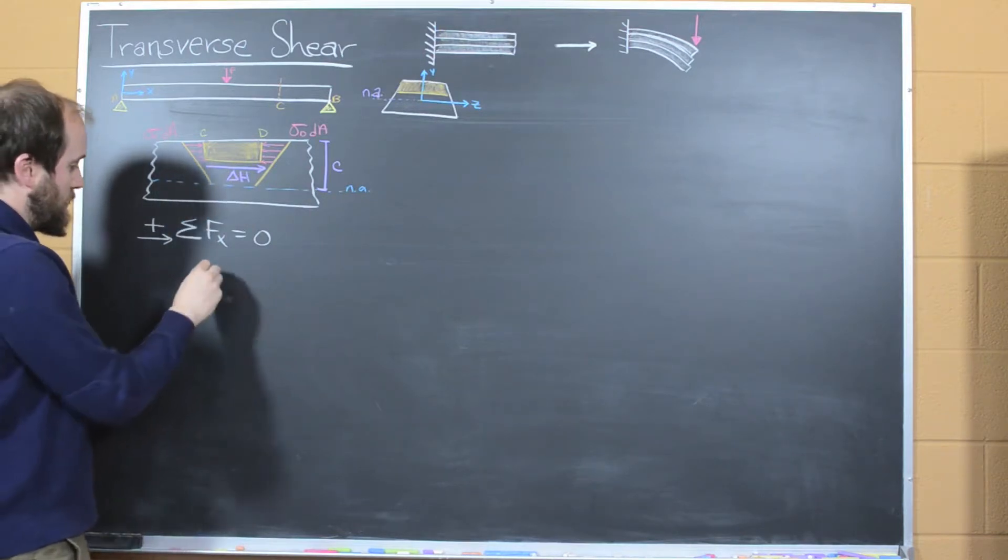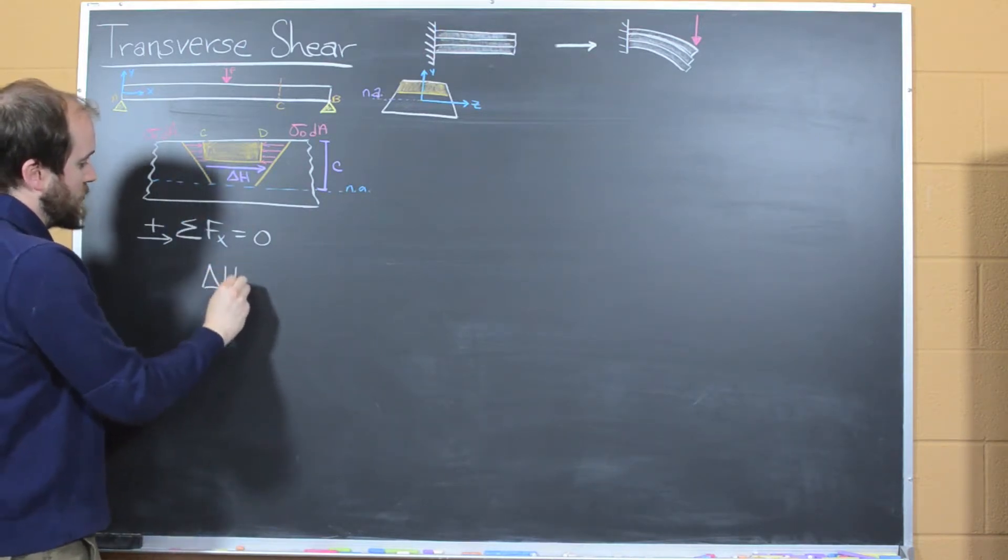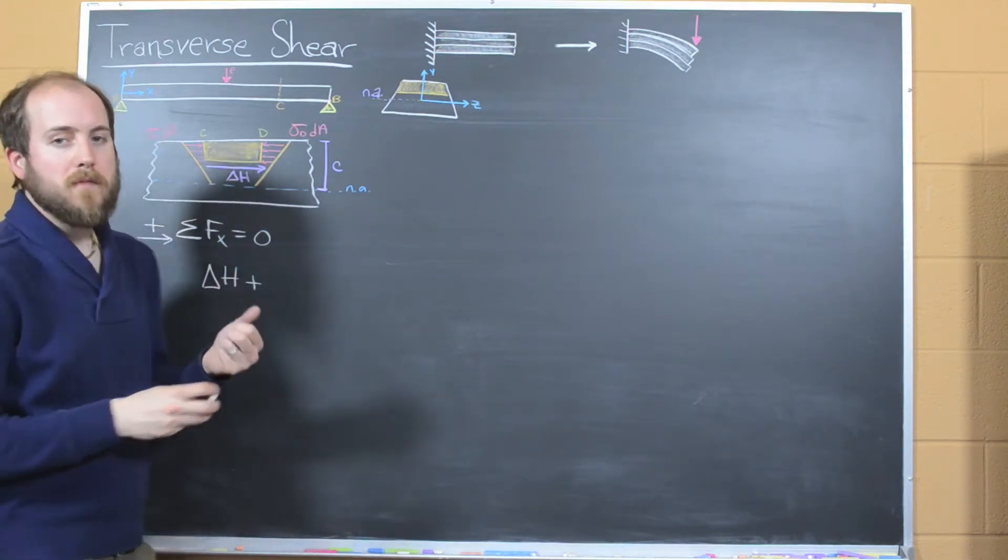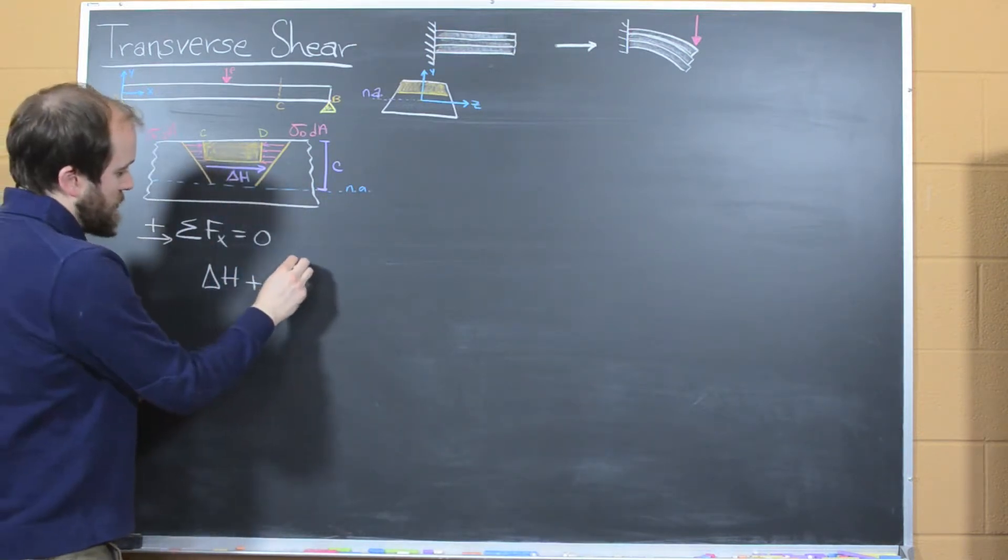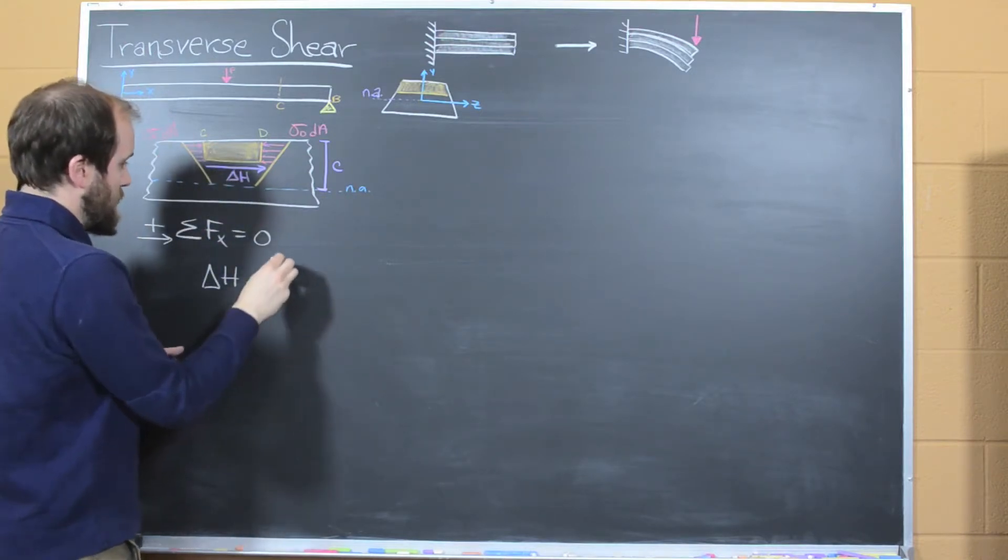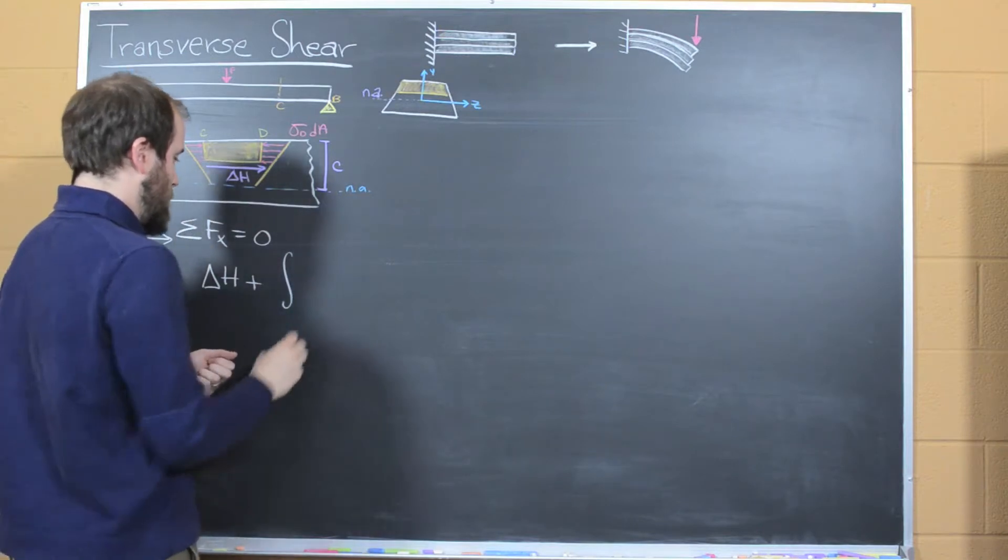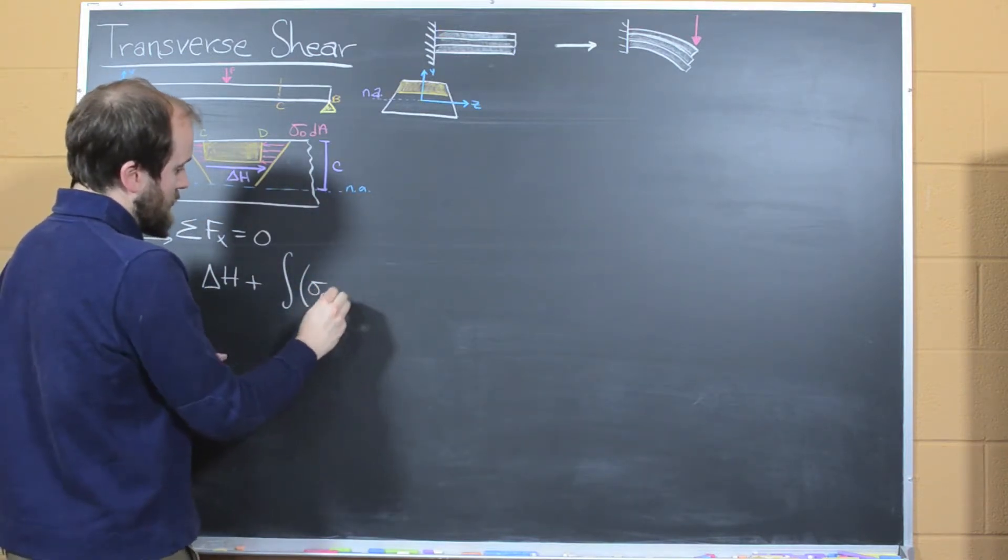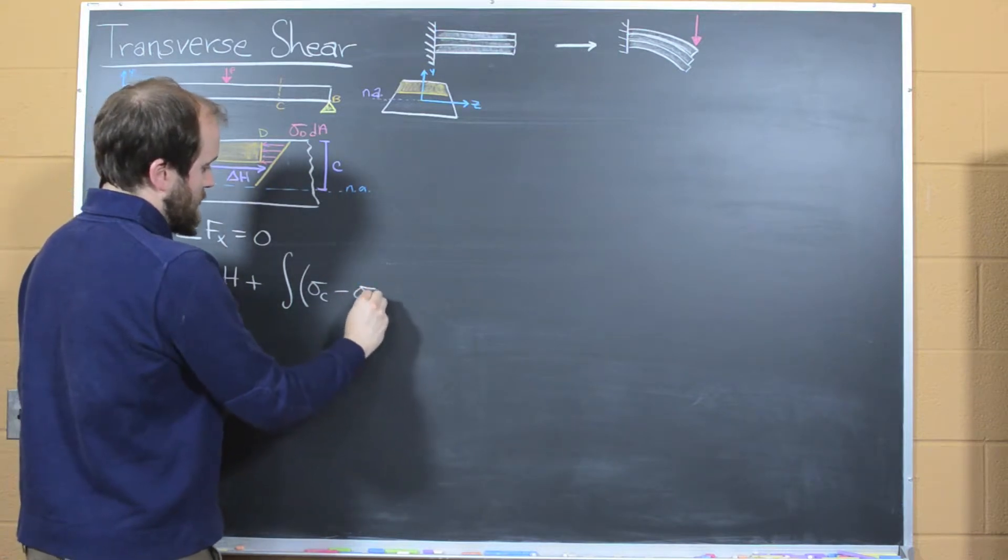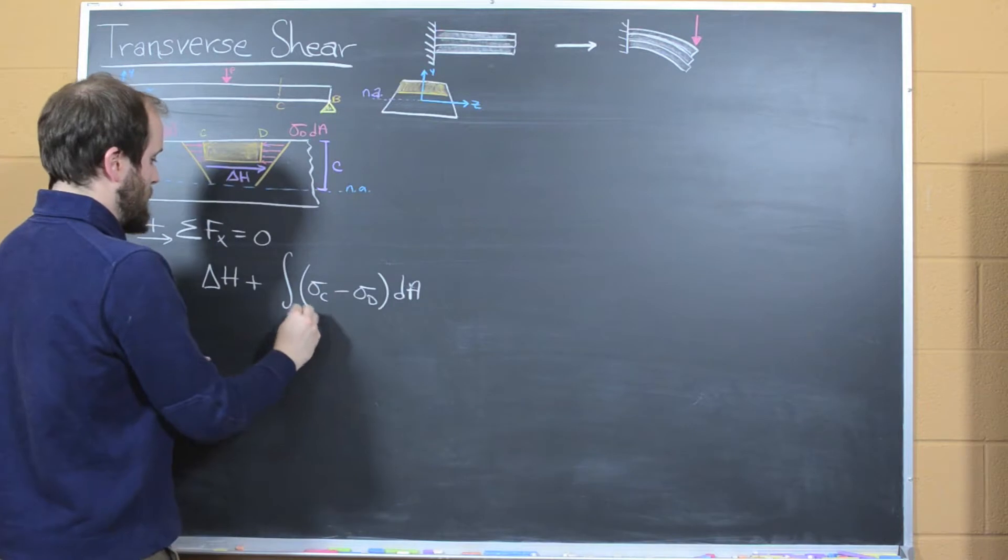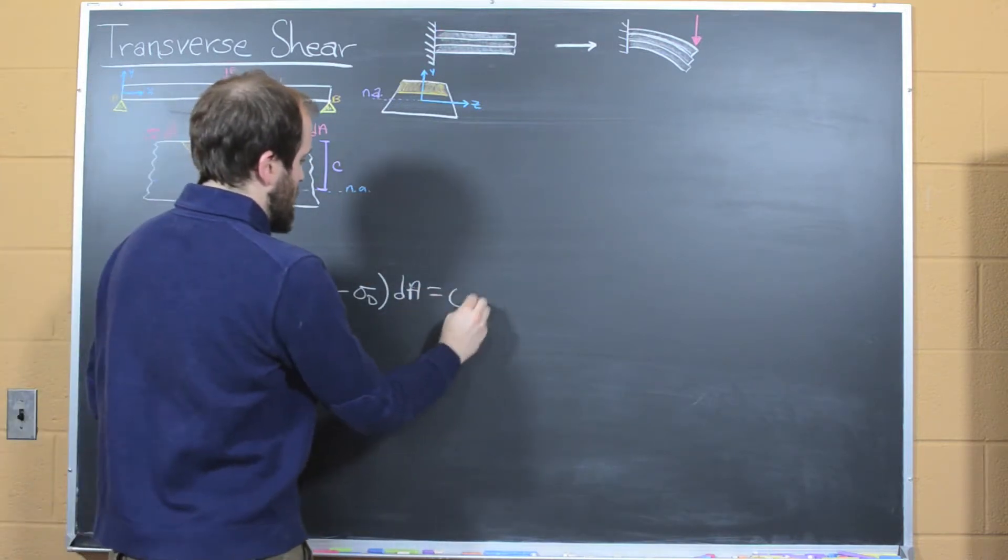So if we do that, what we end up with is that delta H, which is positive, is going to be added to... What we're going to do is integrate over the area to get the force in each of these. And so it'll be sigma C minus sigma D, acting over the area element of dA. And that's all going to be equal to zero.